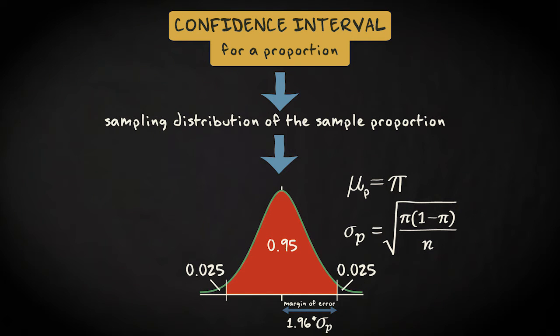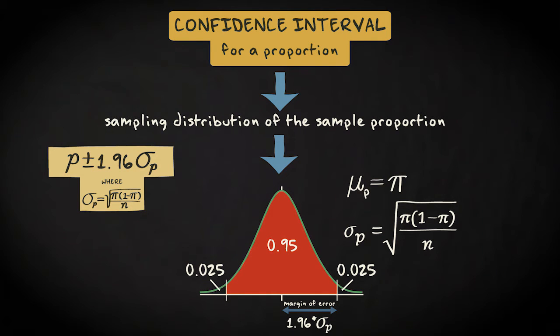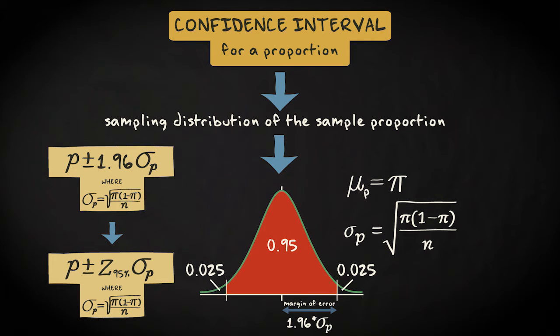The formula with which we can compute the 95% confidence interval looks like this: p plus and minus 1.96 times the standard deviation of the sampling distribution of the sample proportion. 1.96 is the z-score that corresponds to the 95% confidence level.